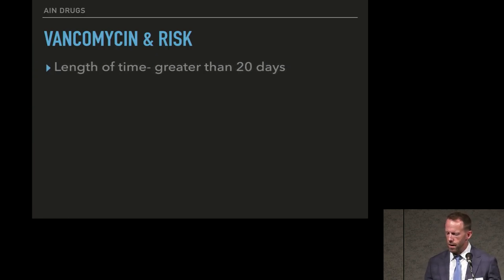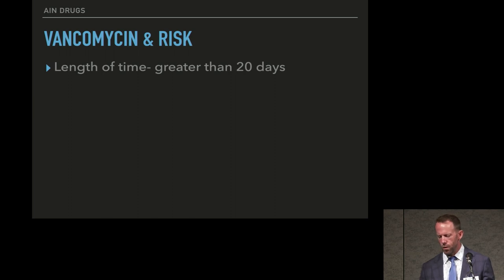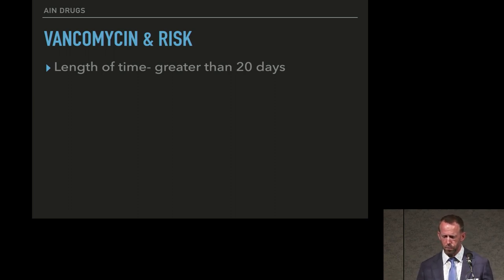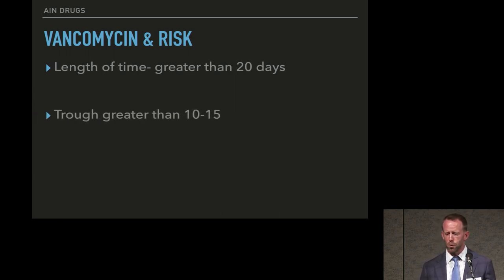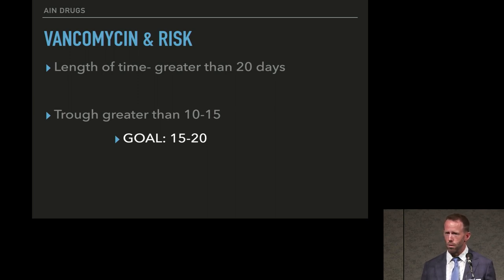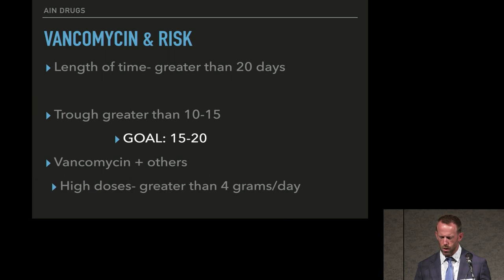Additional vancomycin risk factors include prolonged duration of therapy — longer time also means more opportunity for troughs to go out of range. Current guidelines target troughs of 15 to 20, yet the risk of AKI begins at troughs greater than 10 to 15. So just reaching goal already puts patients at risk. Doses above 4 grams per day are particularly risky.